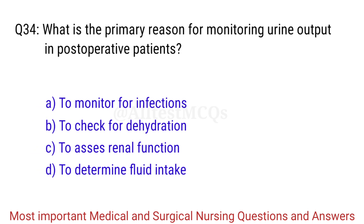Q34. What is the primary reason for monitoring urine output in post-operative patients? The correct answer is Option C: To assess renal function.